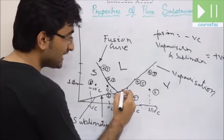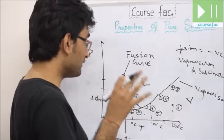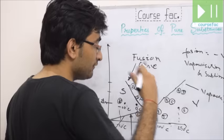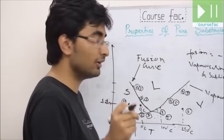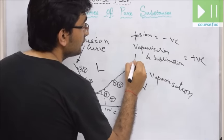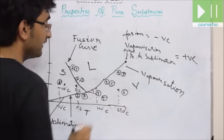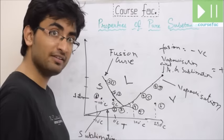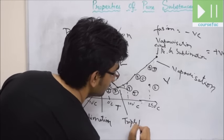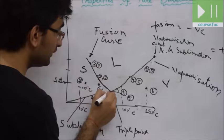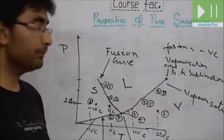Two important points on the PT diagram: as temperature and pressure increase, the liquid-vapor transition zone decreases to zero — this is the critical point. The point where all three phases (solid, liquid, vapor) exist in equilibrium is the triple point. This completes the PT diagram.